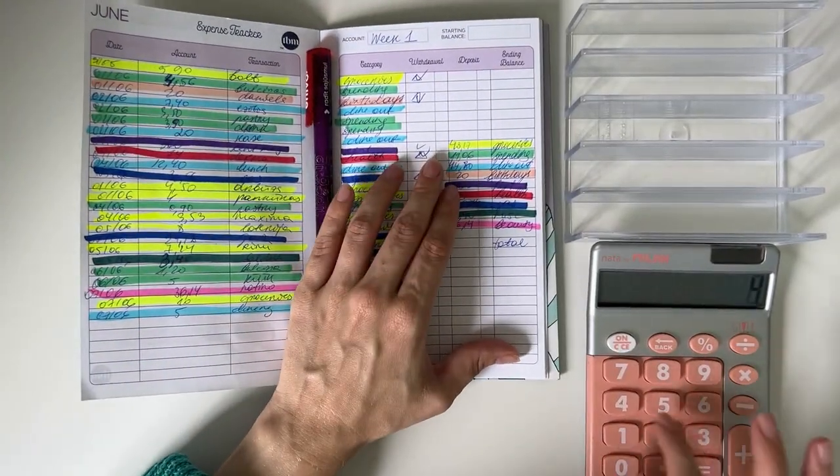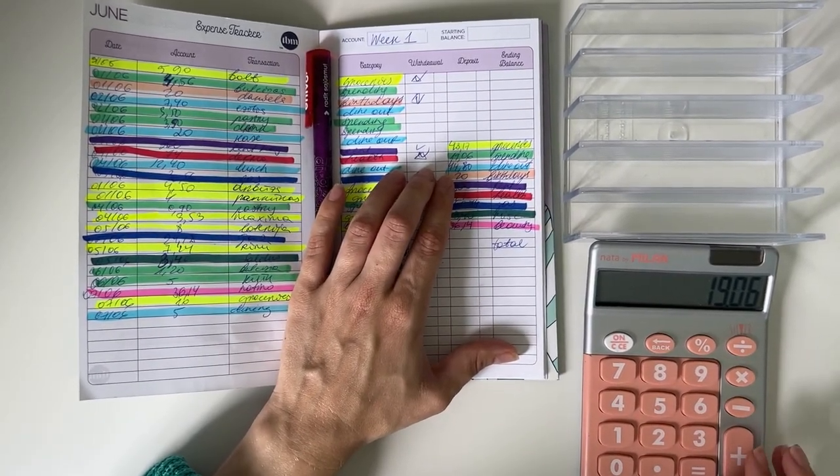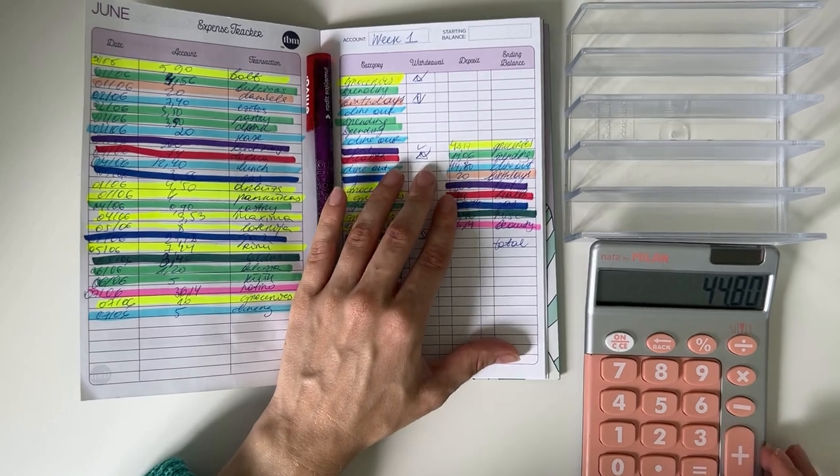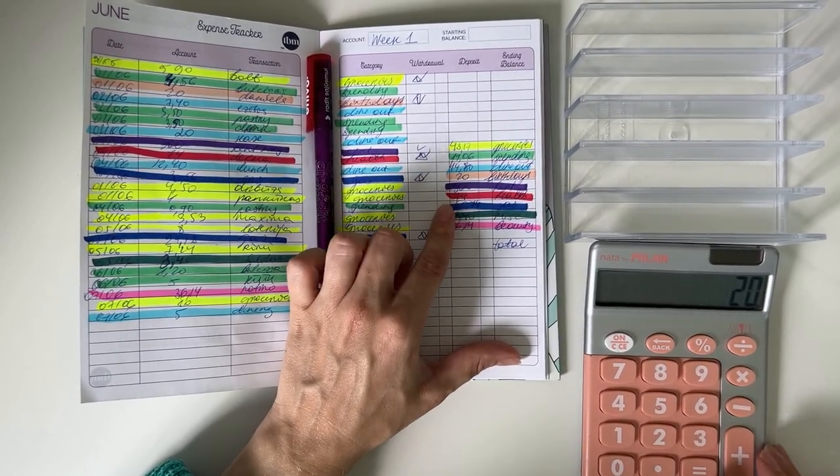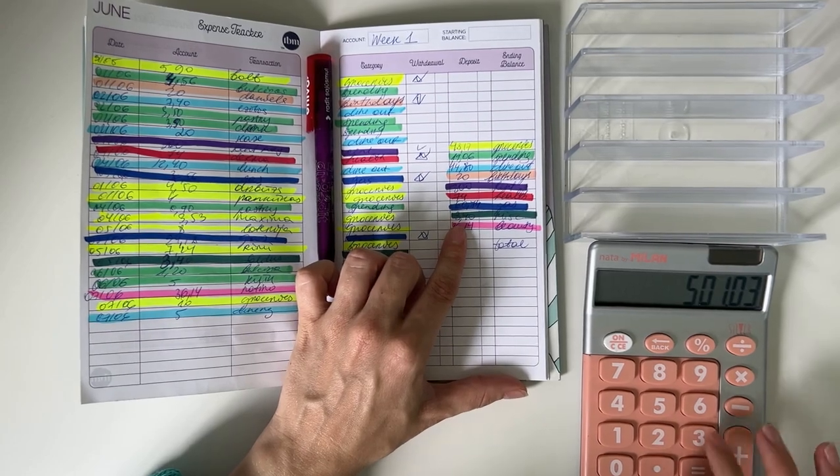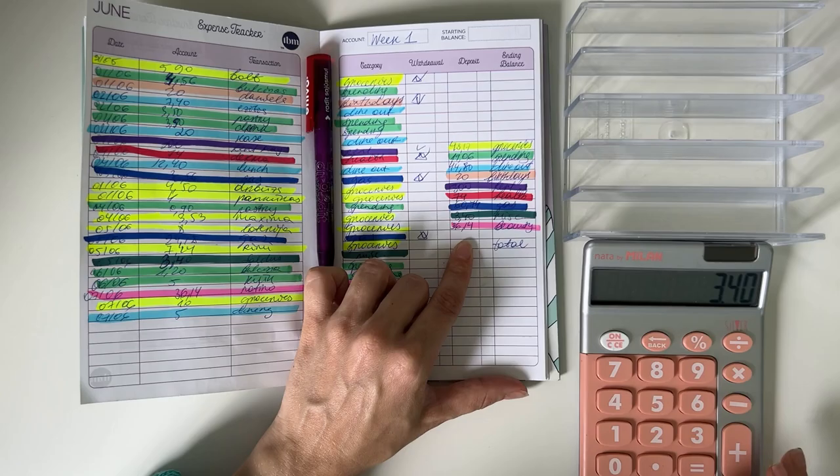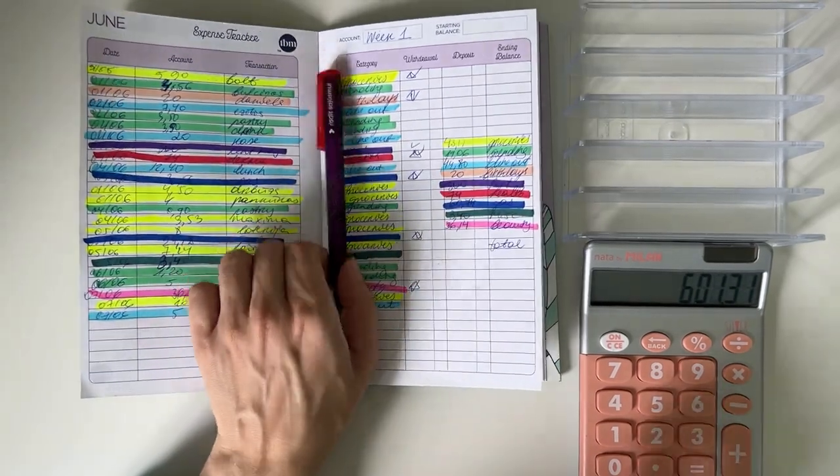This week we had 43.17 going to groceries, 19.06 into spending, 44.80 in dine out, 20 in birthdays, 300 in rent, 74 in health, 60.74 in gas, 340 in miscellaneous, and 36.14 in beauty. So that was 601 euros and 31 cents, perfect.